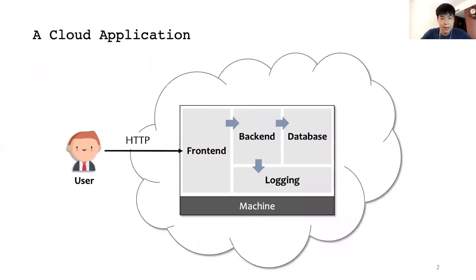The architecture of cloud applications is constantly evolving. This is a traditional monolithic cloud application consisting of four modules: front-end, back-end, database, and logging. The four modules are packaged and deployed as a whole, which leads to inflexibility when upgrading and scaling the modules individually.